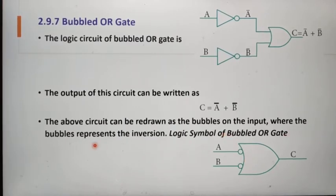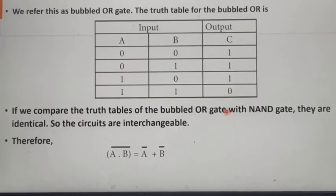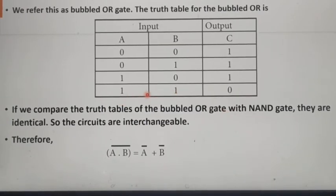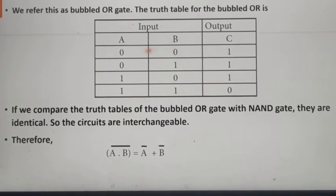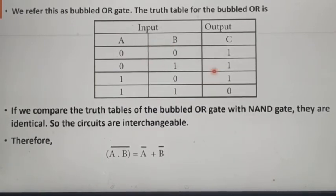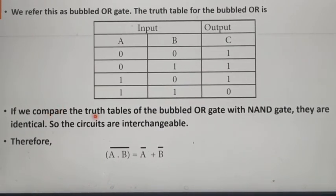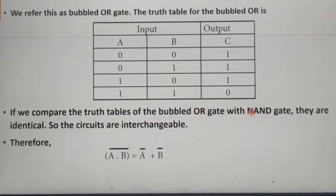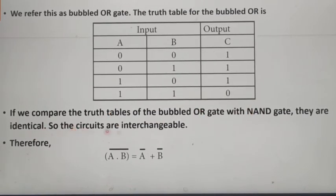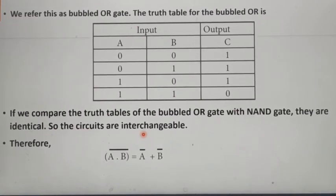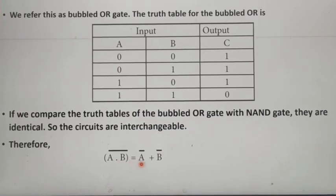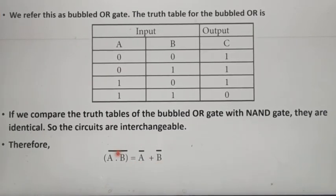The bubbles represent inversions. This is the logic symbol for Bubbled OR Gate. In the truth table for Bubbled OR Gate, if both inputs are true (both are 1), our output will be false. For all remaining possibilities — if both inputs are false or any one input is true — our output will be true. Comparing the truth tables of Bubbled OR Gate and NAND Gate, they are identical. So the circuits are interchangeable. Therefore we can write: NOT of A OR NOT of B is equal to NOT of (A AND B).